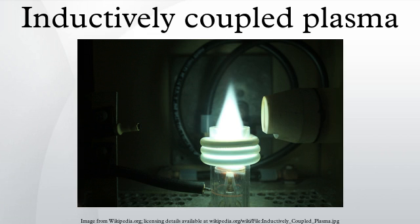There are three types of ICP geometries: planar, cylindrical, and half-toroidal. In planar geometry, the electrode is a length of flat metal wound like a spiral. In cylindrical geometry, it is like a helical spring. In half-toroidal geometry, it is a toroidal solenoid cut along its main diameter into two equal halves.